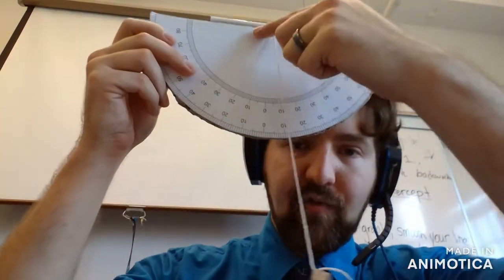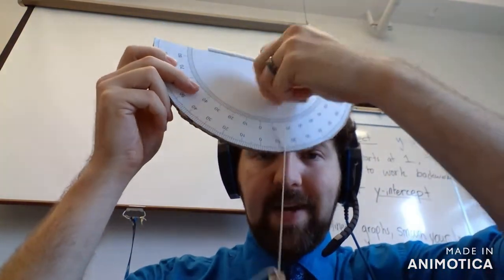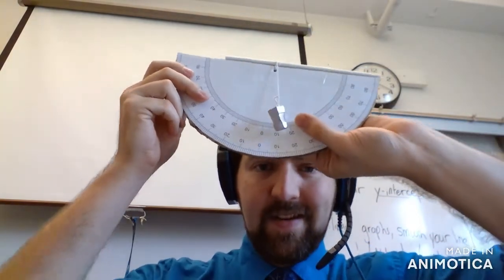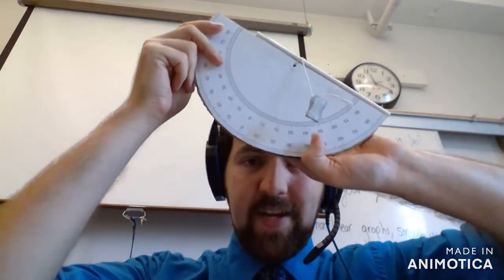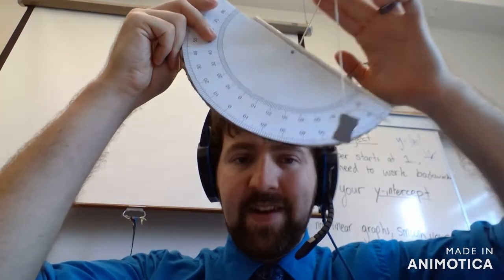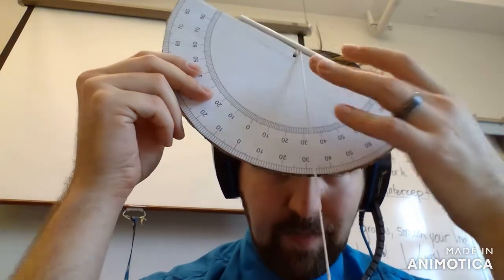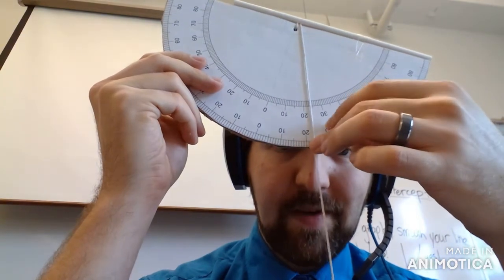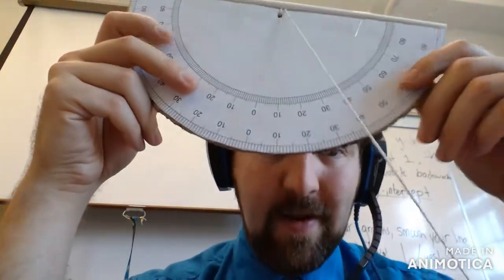The other thing when you're building this is you want the string to hang past our protractor. If my string is like this, sure it'll work, but it makes reading it that much harder. When I tilt it on an angle, is the string pointing at 20 or 30 or 40? Whereas here, because it's going past, if I pause it at a certain angle, I can get a much more exact measurement. I can see it's at like 24 degrees. You'll probably get within one degree.